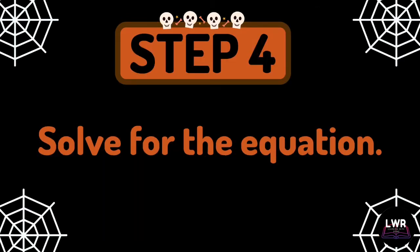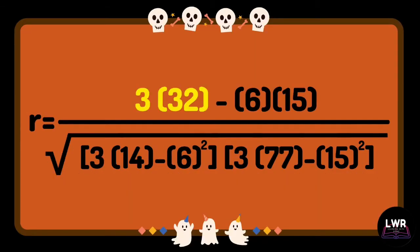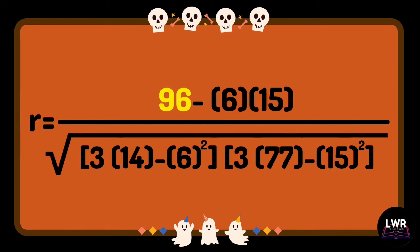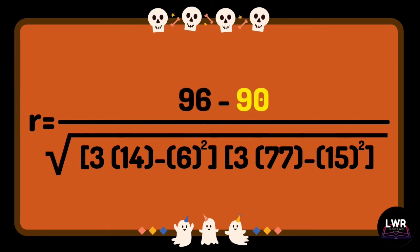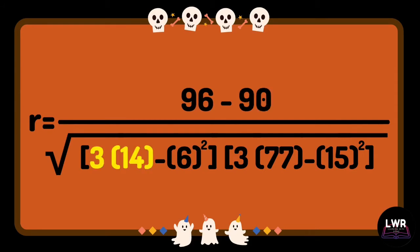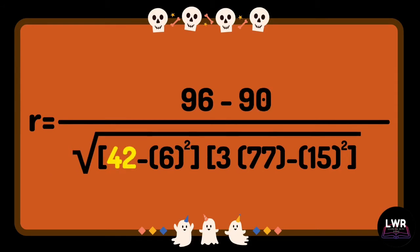Moving on, we have step number 4: solve for the equation. 3 times 32 is equal to 96. 6 times 15 is equal to 90. 3 times 14 is equal to 42.